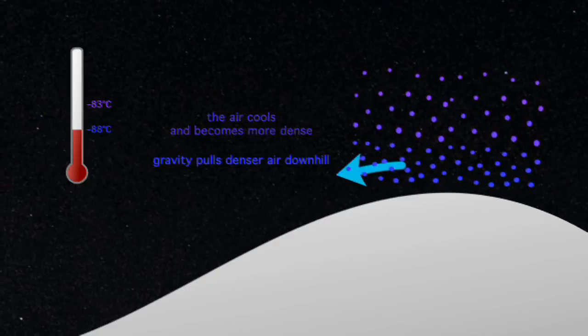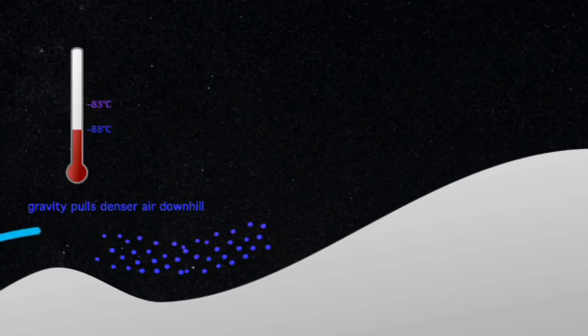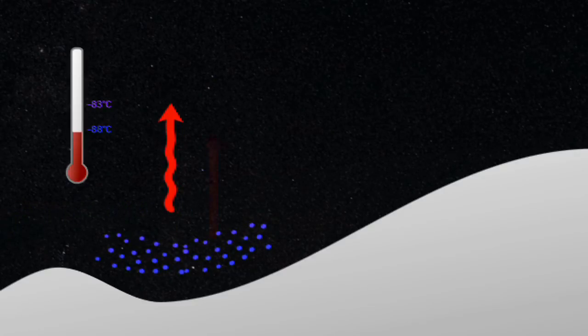This lower layer that's getting very cold under the clear sky conditions is denser and it starts to slide down this huge dome of Antarctica.